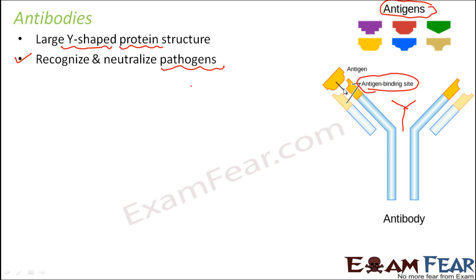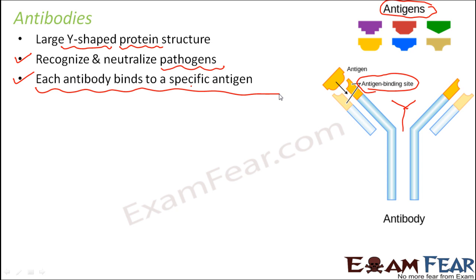This antibody will have antigen binding sites — these are the sites where the antigen can bind to the antibody. Once the antibody binds to the antigen, it causes changes in the antigen and prevents it from causing diseases in our body. Each antibody will bind to a specific antigen, because only the antigen that matches the binding site will be able to bind to that antibody.